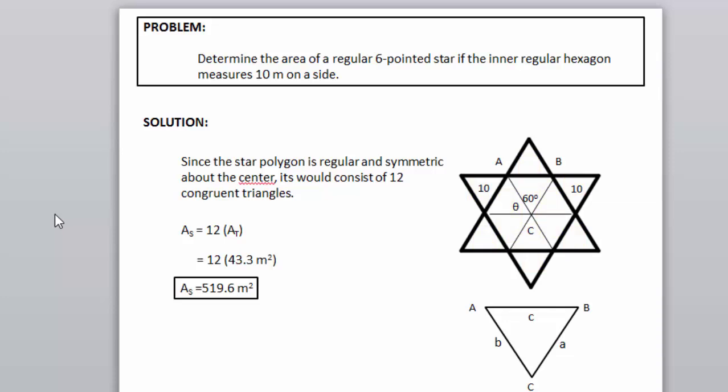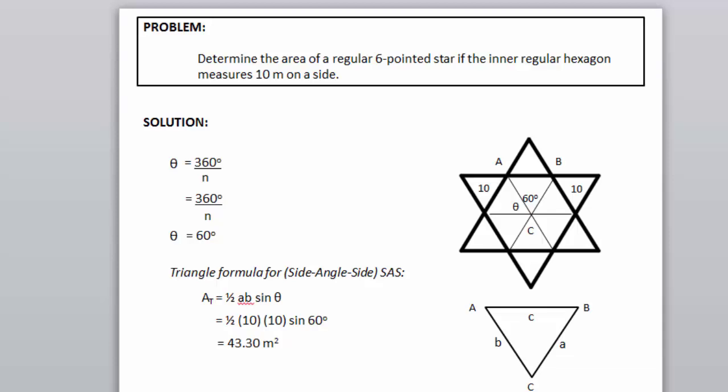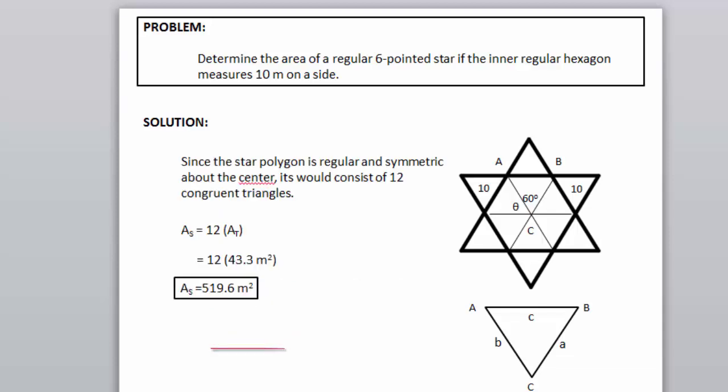Simply multiply the area of the triangle we get previously, which is 43.3 meters squared, multiplied by 12, equivalent to the 12 triangles inside the 6-pointed star. Thus, our answer is equal to 519.6 meters squared.